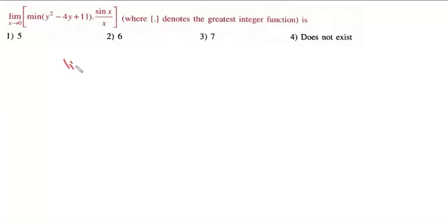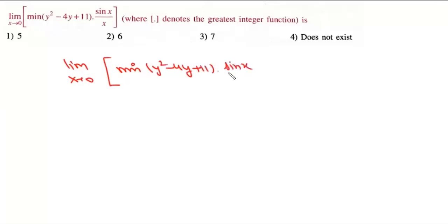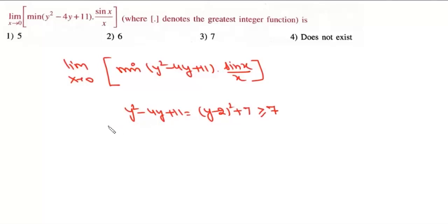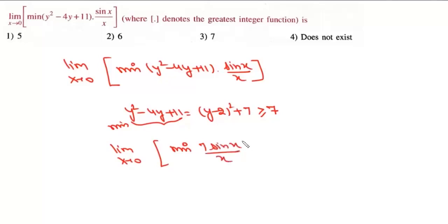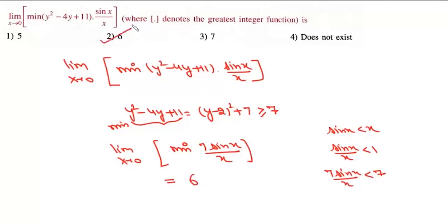Next problem: find limit x→0 of GIF[min(y² minus 4y + 11) · (sin x / x)]. We rewrite y² minus 4y + 11 = (y minus 2)² + 7, which is always ≥ 7. So the minimum value is 7. Now since sin x < x, we have sin x / x < 1, so 7 sin x / x < 7, and GIF of that is 6. That is option 2.